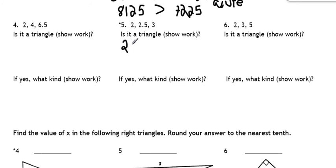Number five. First we need to determine if it's a triangle. Two smaller sides: 2 plus 2.5, and then 3 on the other side. So we have 4.5 is bigger than 3. So yes, it is a triangle.